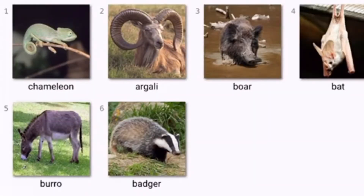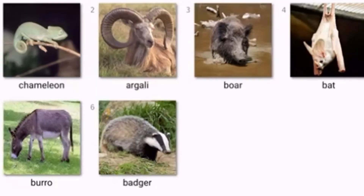What have we got here? Argali again, and also chameleon, boar, bat, burrough — which is apparently a type of donkey — and a badger.